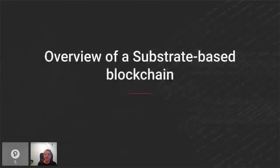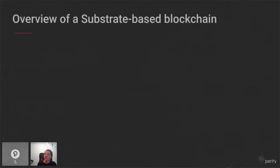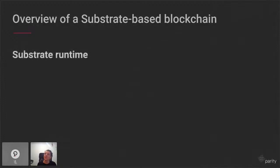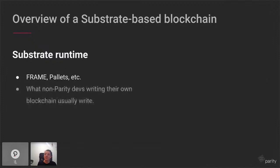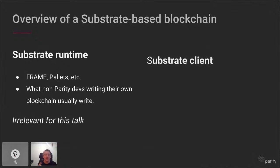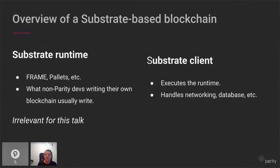A substrate-based blockchain is made of two parts. Part one is the runtime, which is made with FRAME and pallets. If you type substrate tutorials on Google, the tutorials are mostly about writing your own runtime — that's what you work on if you base your chain on substrate. What is relevant for today's talk is the substrate client, which uses and executes the substrate runtime. It also handles the networking, the database, and everything necessary to make the runtime work — GRANDPA, BABE, whatever.